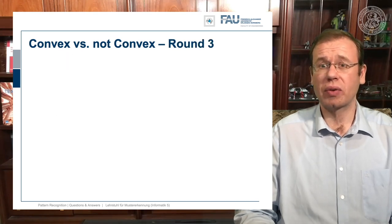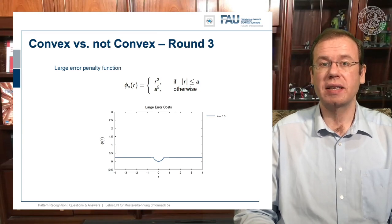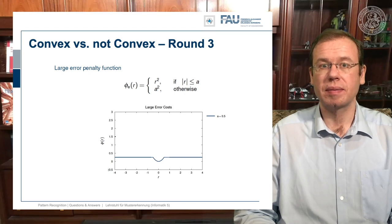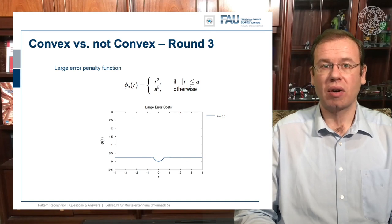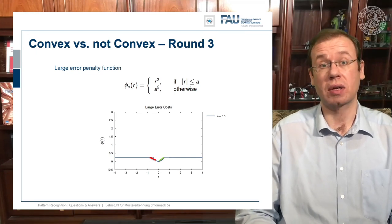Round three: another penalty function we discussed — the large error penalty function. Here we are cutting off at a certain large error and assigning a constant loss. And this one is not convex. Why is it not convex? We can find points we connect that lie above the function, but there are also points where, if I connect them, we are lying below the function. So this is not a convex function.